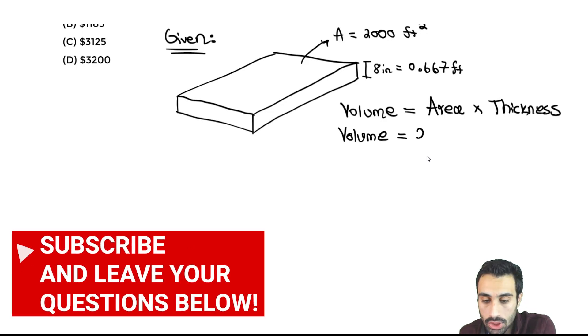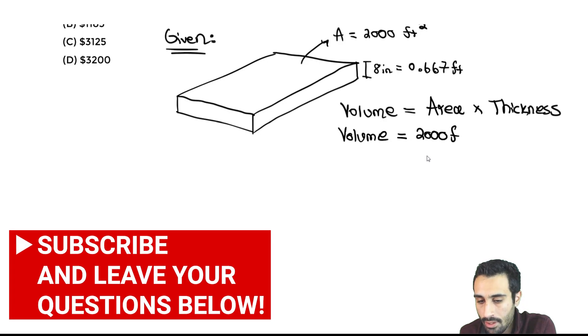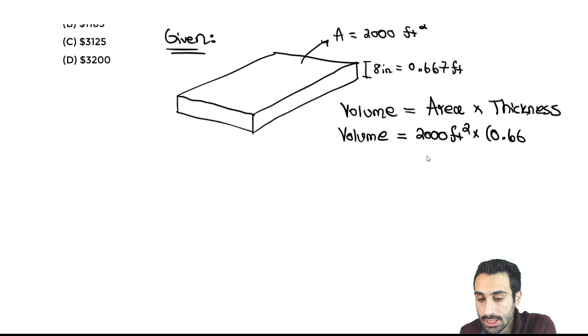The volume of concrete is going to equal the area, which is 2,000 foot squared, multiplied by the thickness, which is 0.667 feet. Now we find the volume. This is the volume of concrete that needs to be poured. We take that 2,000 times 0.667 and we get 1334. Foot squared times feet gives us cubic feet, foot to the third. We have the volume that we need to pour for this parking lot.